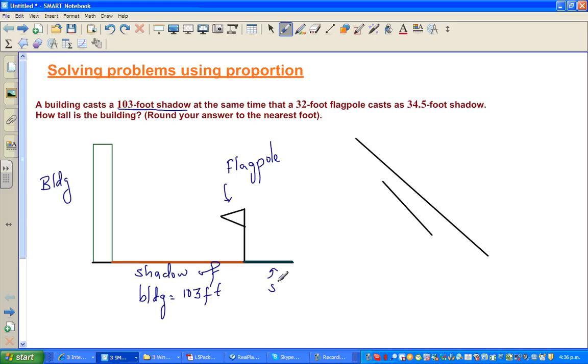This is the shadow of the flagpole, which is 34.5 feet. Imagine the Sun is here, casting the shadow to the right.